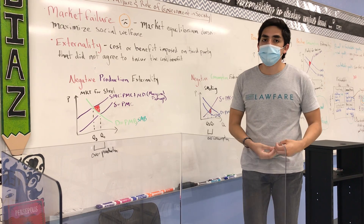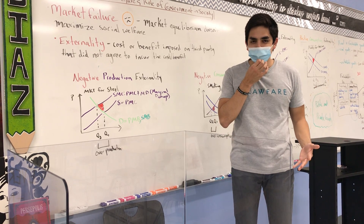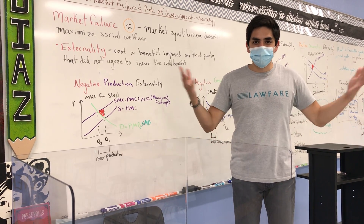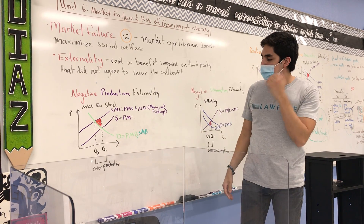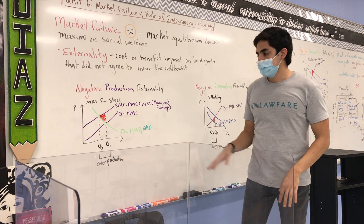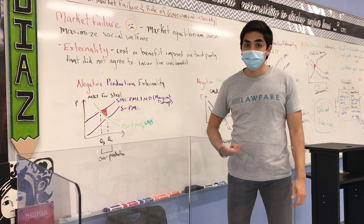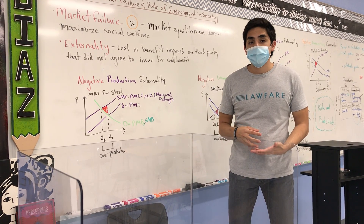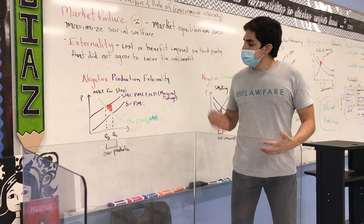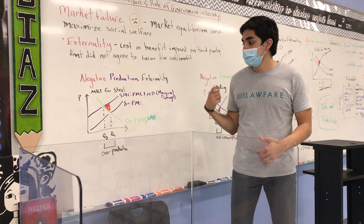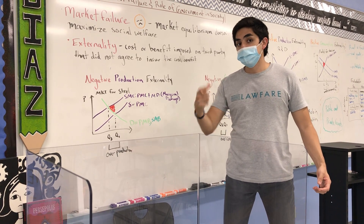I think you all know what an externality is intuitively. So let's run through some examples. In a conventional supply and demand graph, assuming there's no market failure and no externality, the demand curve is equal to the private marginal benefit curve and the social marginal benefit curve, reflecting the additional benefit in dollars associated with the consumption of that good. And the supply curve represents both the private marginal cost curve and the social marginal cost curve, reflecting the additional cost associated with additional output.